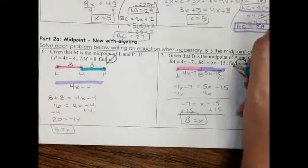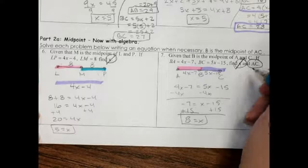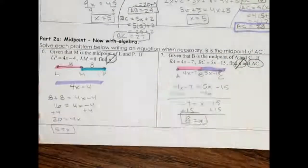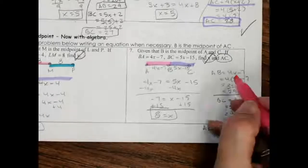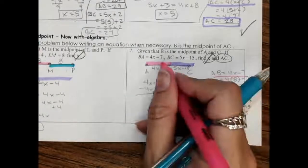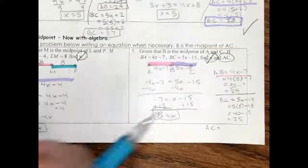Am I done with the problem? No, I got this part, but now I need to find AC, which is the whole thing. In order to find that, I need to plug in each one of these. So what I did is I went through and I said, well, AB is this. That's AB. And I plugged in my 8. And I solved and I found that this part here, the pink part, is 25.